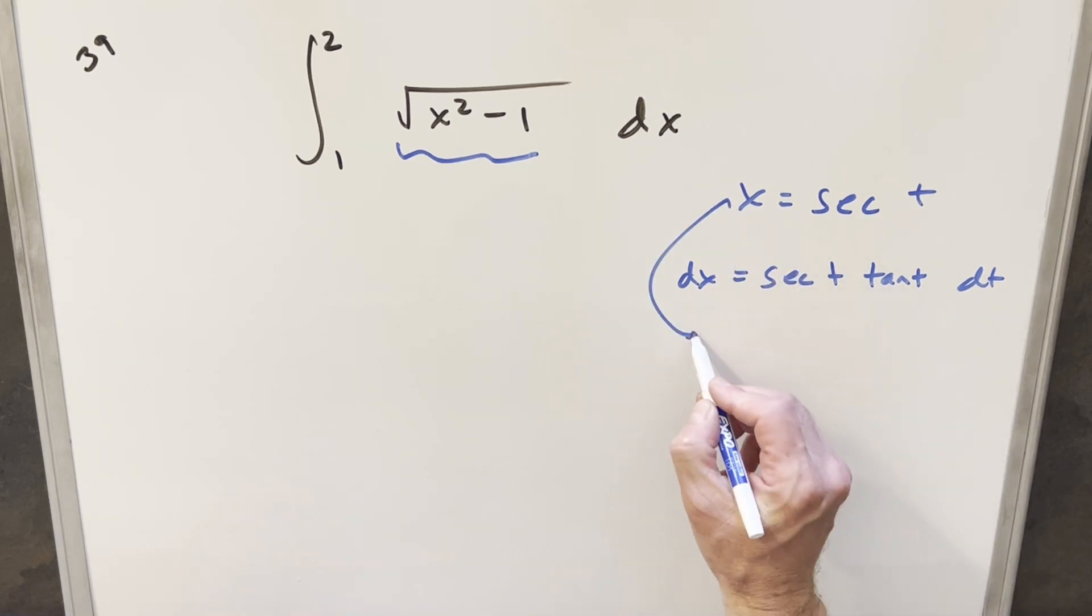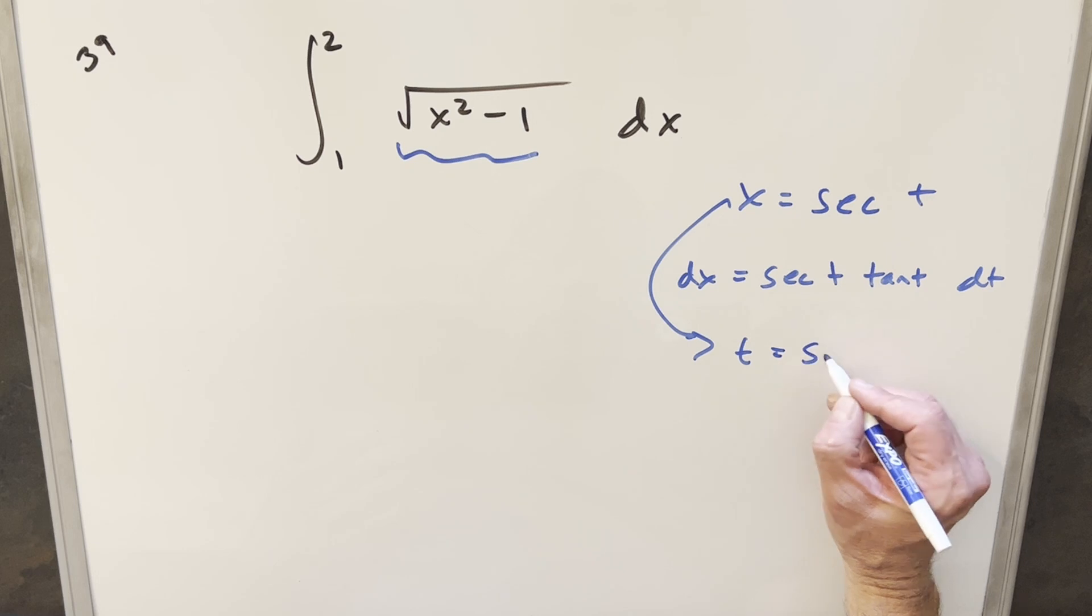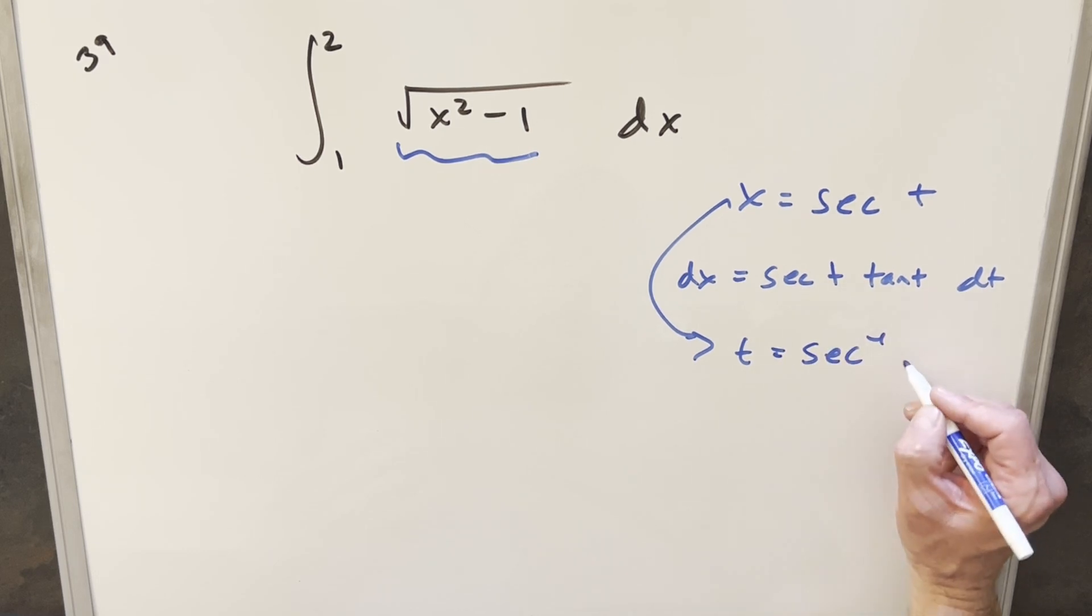And then let's just solve for our t value. So for t, we'll just take the inverse on both sides and we have t is going to be equal to sec inverse of x.